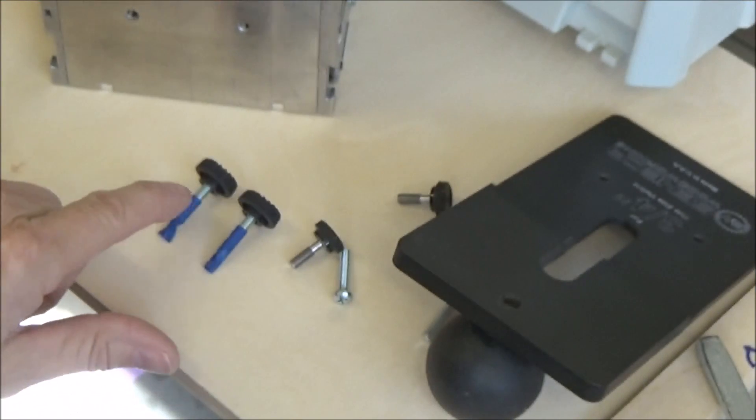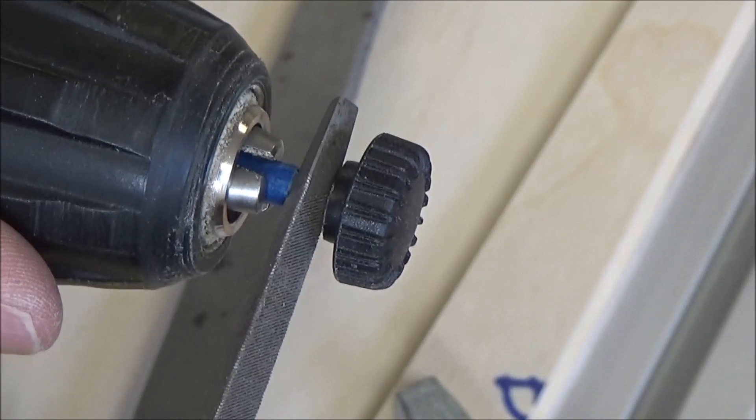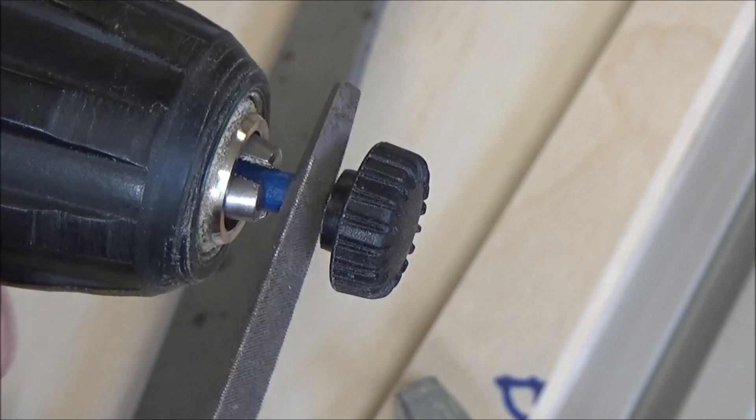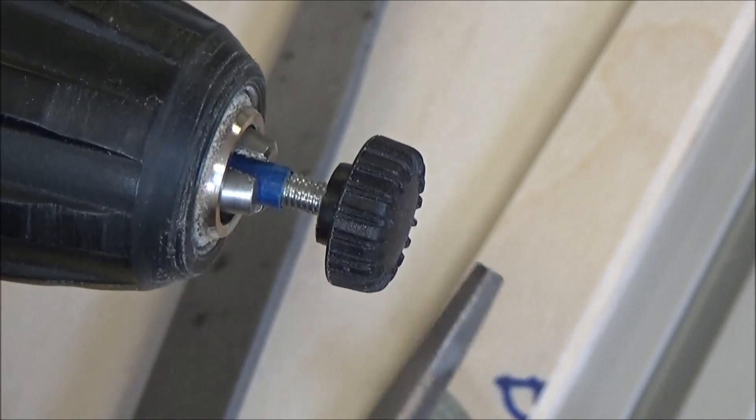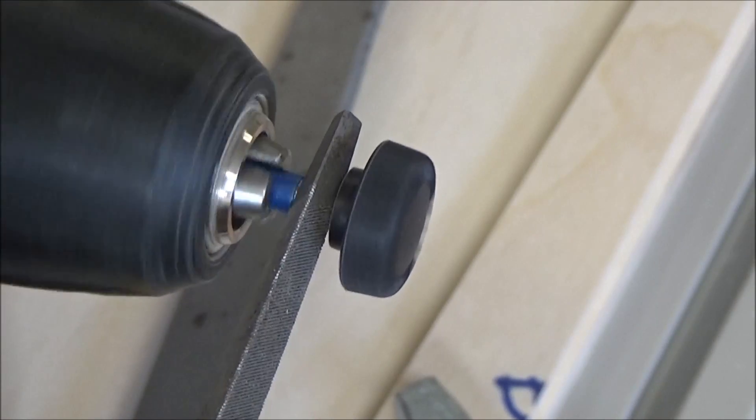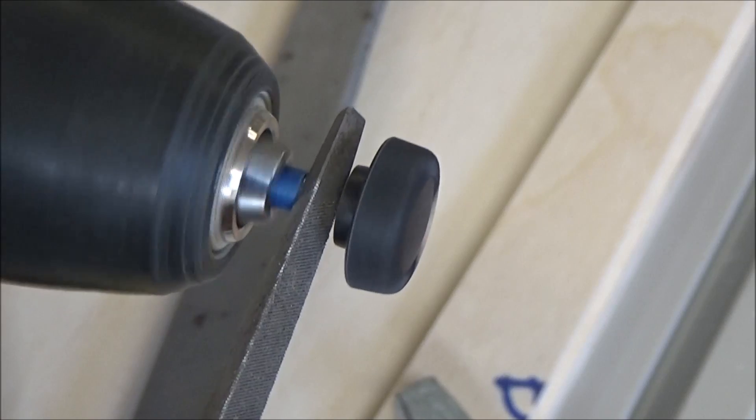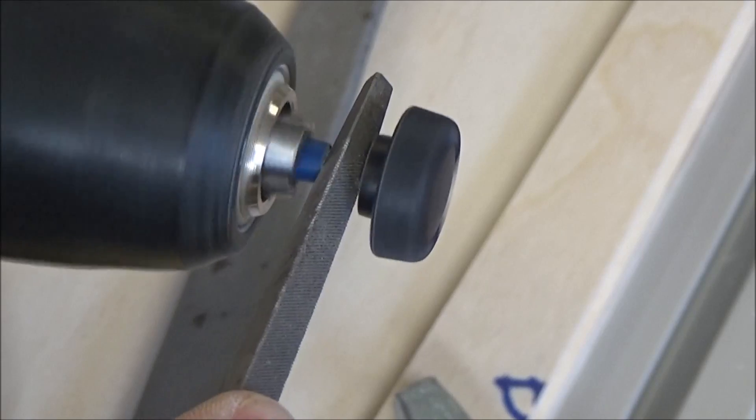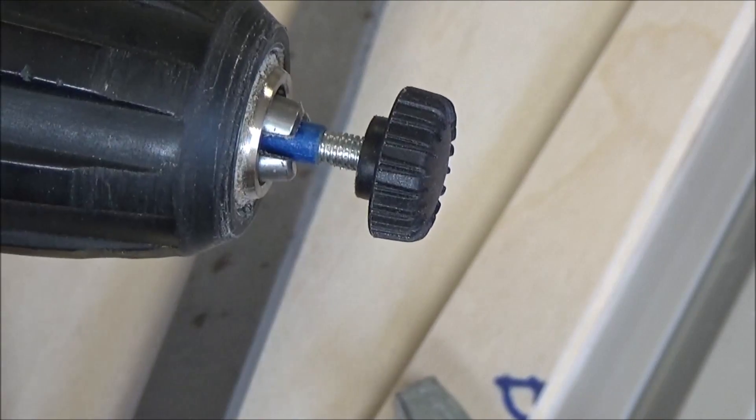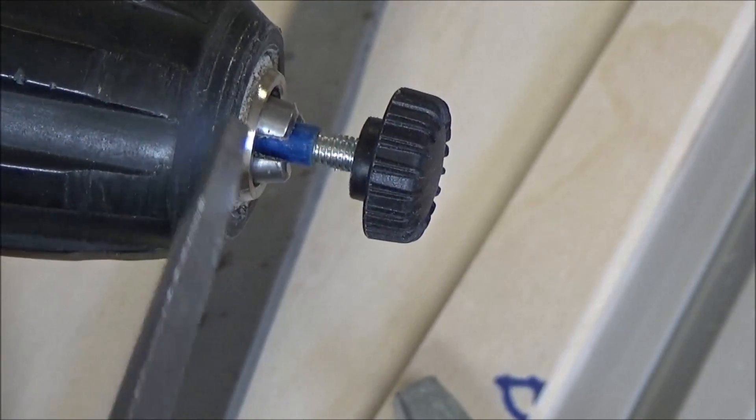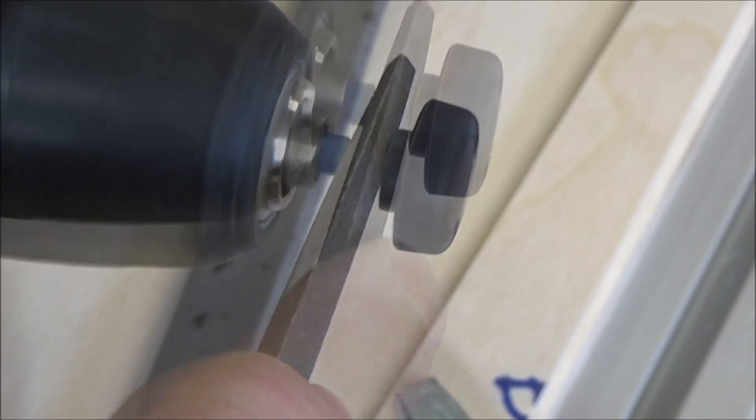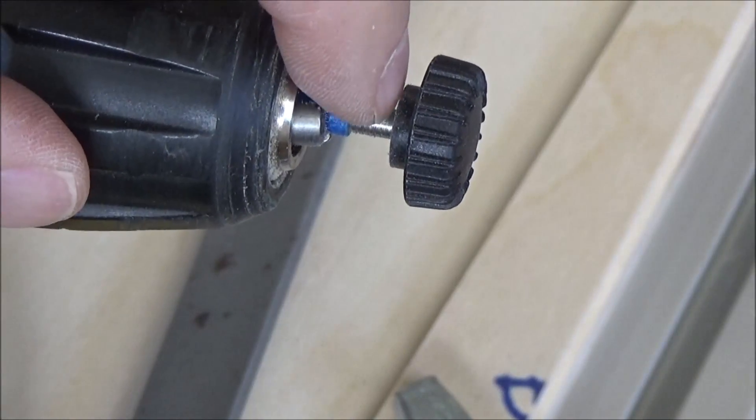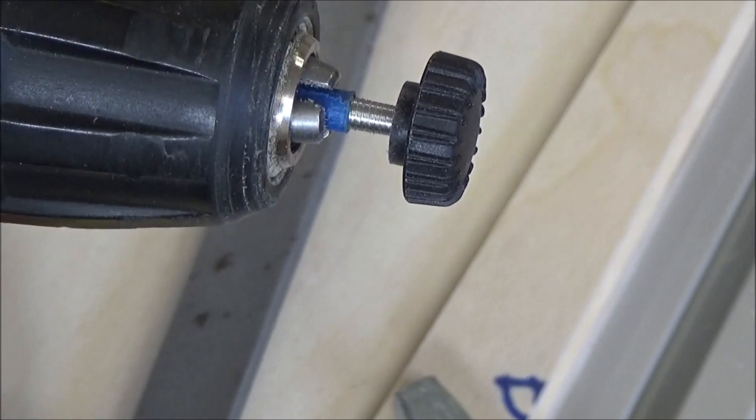There you go, that's the portion I want to remove. I'm going to try this triangular file. I can hold it about the right width there and see if this will remove material a little faster. Let's try that one.